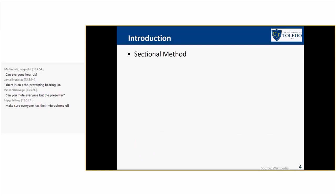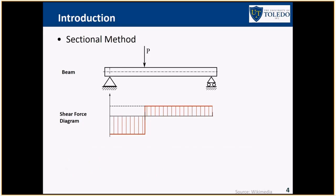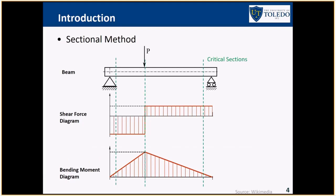In a traditional design environment in an office, what we do is use sectional method. You have a structure, you determine the most critical location for the shear force as well as for the bending moment. And you check the acting forces with the capacities at these critical locations. And accordingly, you make your design or assessment. So that's the sectional method that we use a lot in practice.